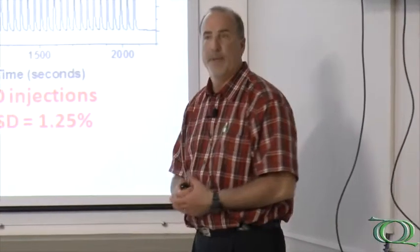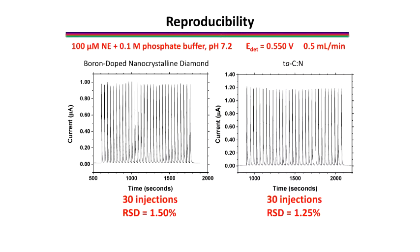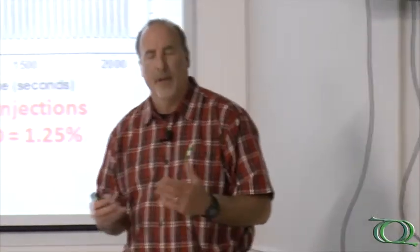If you want to do a measurement, the first detection figure of merit that you look at is how reproducible the measurement is. These are a series of injections of norepinephrine at 100 micromolar. The carrier solution is a phosphate buffer at pH 7, and we're detecting at 550 millivolts, which is out here on the plateau of the mass transport limited region of the curves. The reproducibility for both of them is very, very good — over 30 injections, a variability of about 1.5%, about 1.2% here. High reproducibility is very characteristic of both diamond and ta-C.